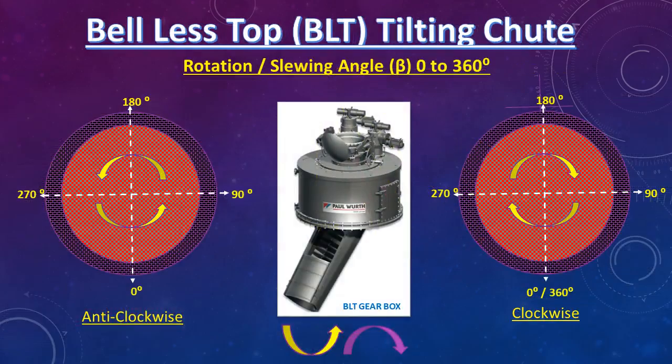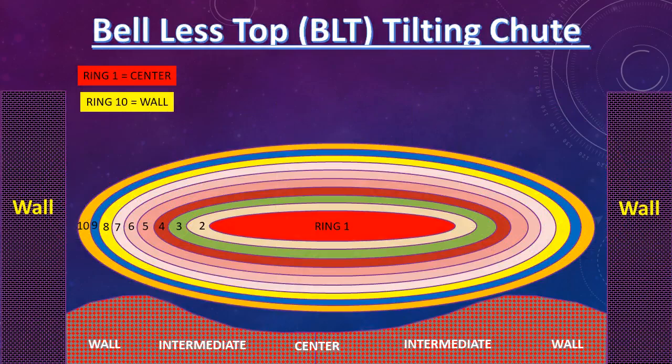Beta angle is the rotation or slewing angle, ranging from 0 to 360 degrees, with continuous rotary movement. With this movement of the tilting shoot, we can distribute burden material throughout 360 degrees into the furnace. For example, imagine 10 rings inside the furnace for burden distribution — ring 1 is the center-most and ring 10 is the outermost towards the wall. For every ring, alpha angle is defined and finalized during commissioning of the furnace. We can start tilting rocker rotation from wall to center or center to wall as per requirement.